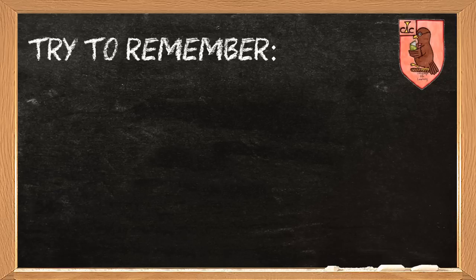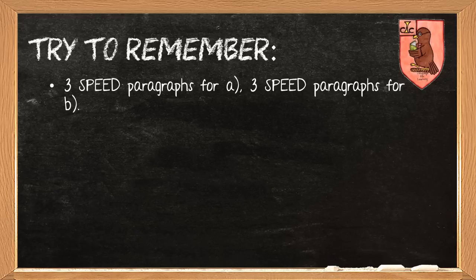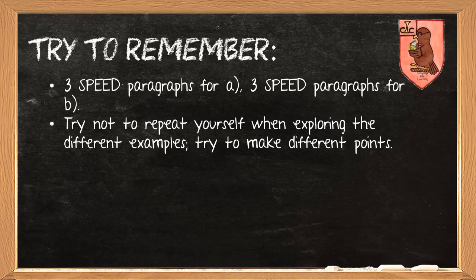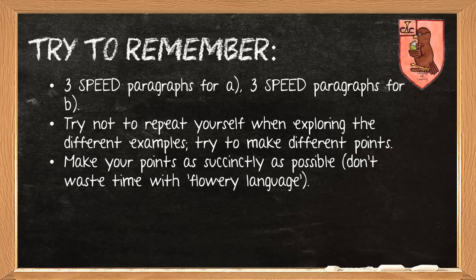To leave you then with a few top tips, things to remember for this question. As I've just said, three SPEED paragraphs for part A, three SPEED paragraphs for B. That is the most important thing to take away from it, and that's all you need to do every time in this question. But to take it a little bit further, try not to repeat yourself when you're exploring the different examples. Try and make different points. So if you're thinking about three SPEED paragraphs, try not to have three similar method boards that are all giving an impression of the storm or the cloud or whatever it is being angry. Try and think about maybe different reactions, different sides. For example, we might be looking at the way he's in awe of the storm, but he's also got a sense of fear of it. Try and make sure you're looking for those different subtleties and looking at that overall impression that's been created.